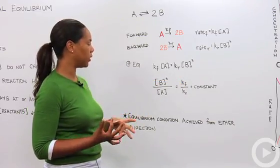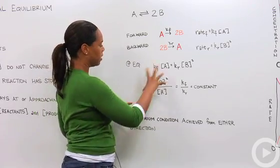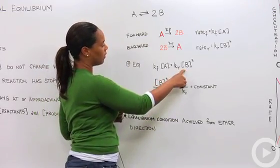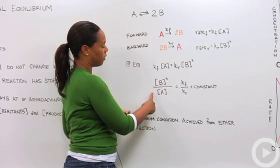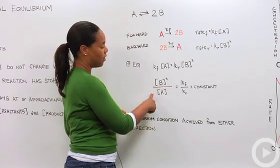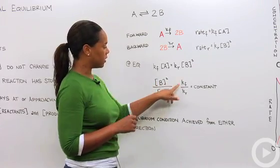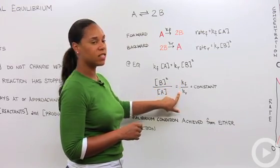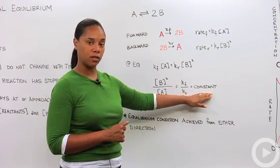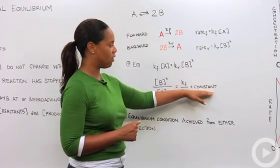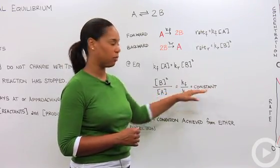If we broke that out and wrote it in terms of equilibrium we basically would be solving for a constant and so we'd solve here and say the concentration of B squared over the concentration of A is equal to k sub f over k sub r and that would equal some constant and we'll find out in the next segment that this is the equilibrium constant.